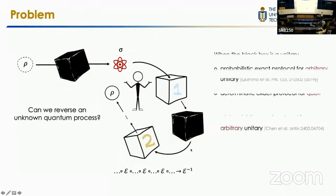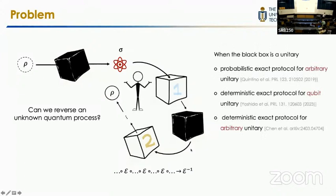Actually, it is possible. When this unknown black box is a unitary gate, there have already been many interesting studies and two very exciting results recently. One from last year derived the first protocol for qubit unitary gates, showing that by querying it just four times, you can reverse arbitrary qubit unitary gates. And a more exciting result this year shows that for arbitrary unitary and arbitrary dimension, there exists a general quantum protocol which can reverse all these unitary gates deterministically and exactly by querying it for finite times.